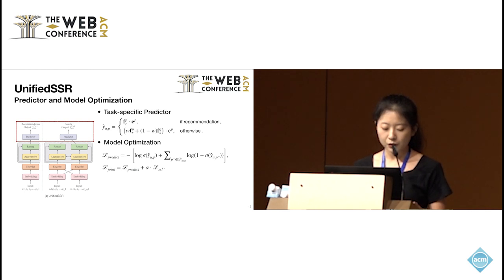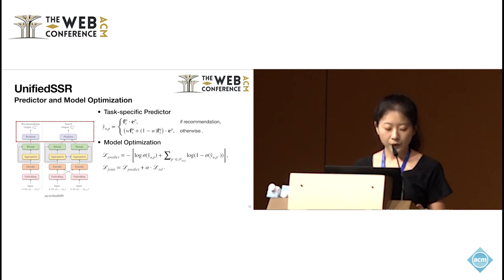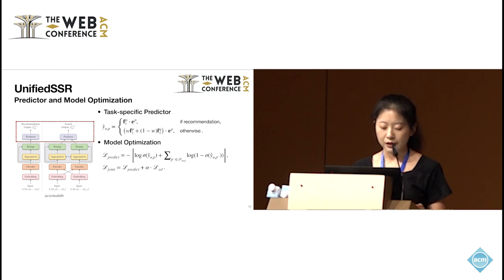Finally, we use a task-specific predictor based on inner product to obtain scores for all products, and utilize binary cross-entropy loss as the prediction loss. We also adopt a two-stage training paradigm: the first stage is multi-task joint pre-training, and the second stage is task-specific fine-tuning.